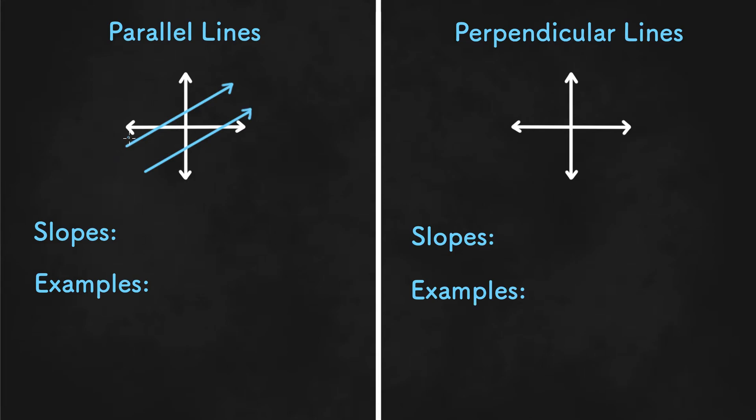And they never intersect each other. And in that case, parallel lines have the same slope. So you're moving the same amount on both lines.